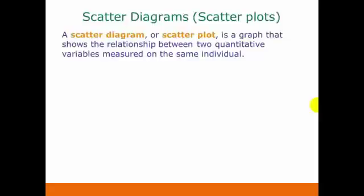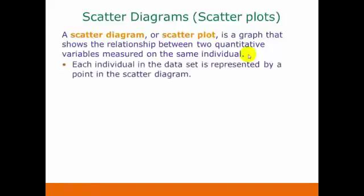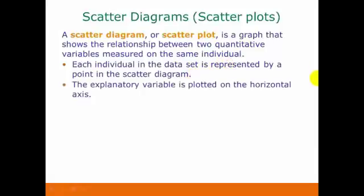A scatter diagram — you can also call this a scatterplot — is a graph that shows the relationship between two quantitative variables measured on the same individual. Each individual in the data set is represented by a point in the scatterplot. The explanatory variable is plotted on the horizontal axis, and the response variable is plotted on the vertical axis.